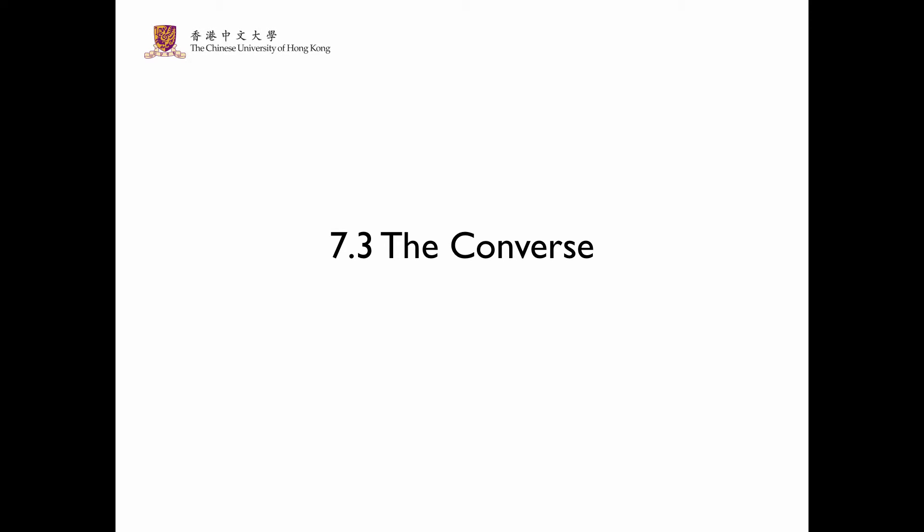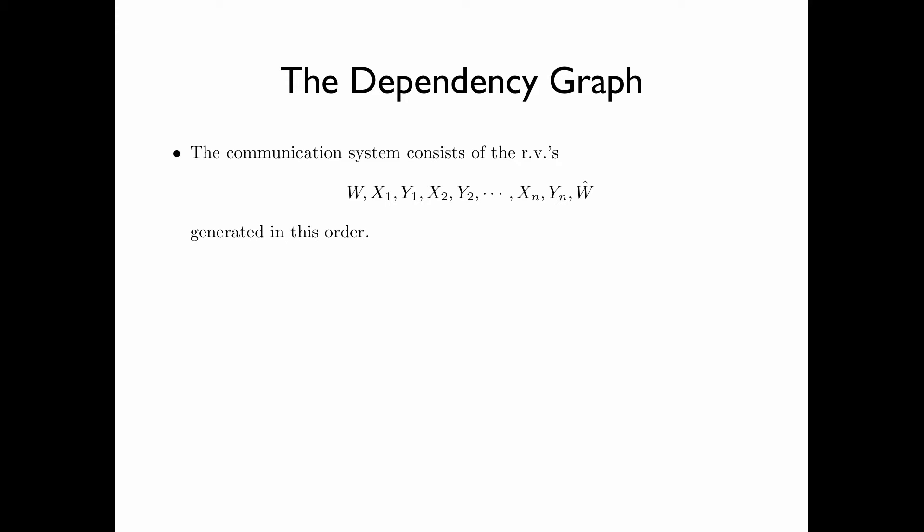In section 7.3, we prove the converse of the channel coding theorem. In the communication system that we are studying, the random variables W, X1, Y1, X2, Y2, all the way to Xn, Yn, and Ŵ are generated in this order.